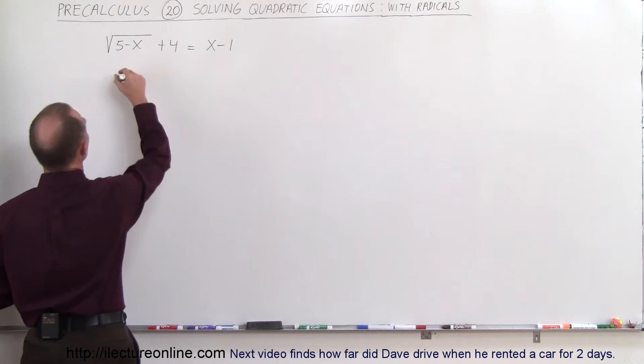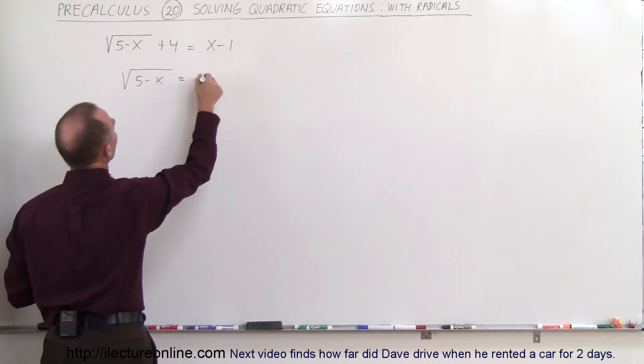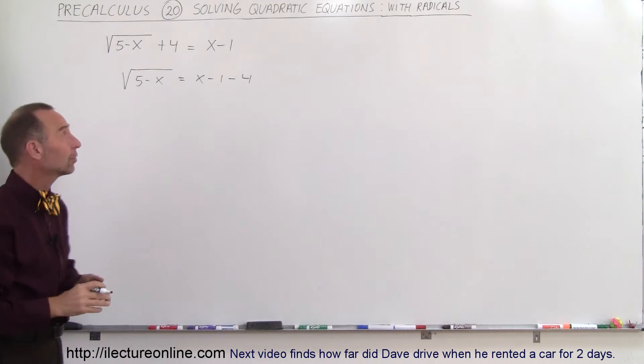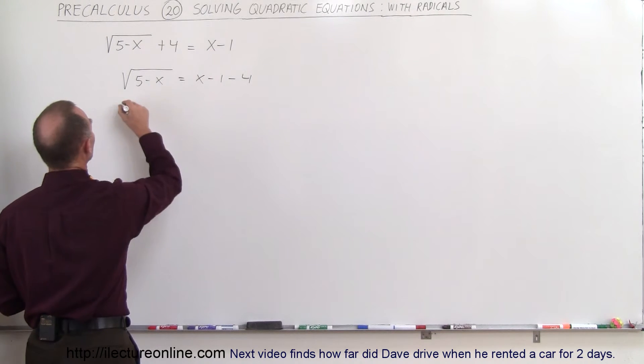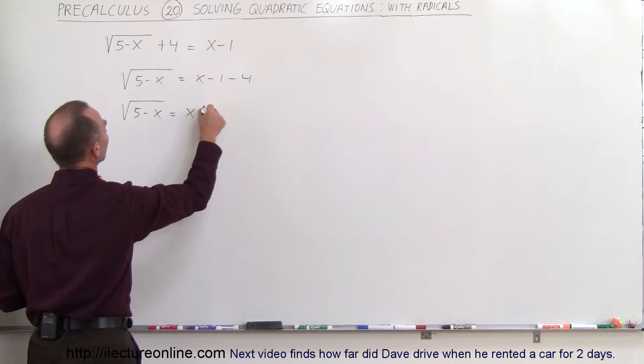We're going to move the 4 across. That gives us the square root of 5 minus x is equal to x minus 1 minus 4. Remember, the sign changes when you cross the equal sign. Let's combine like terms on the right side. So we have the square root of 5 minus x is equal to x minus 5.